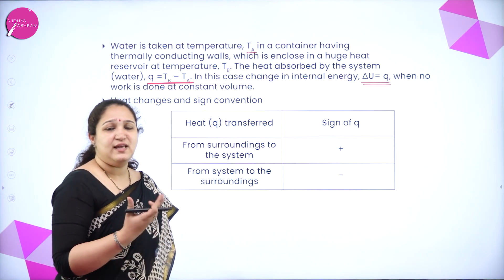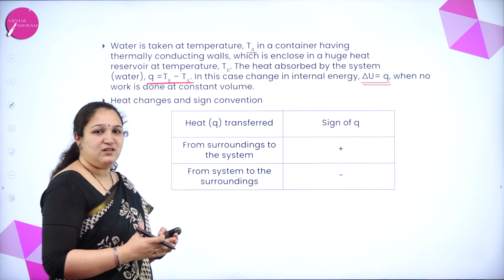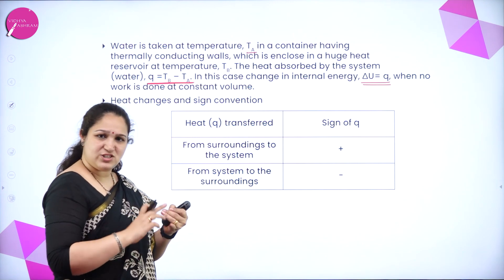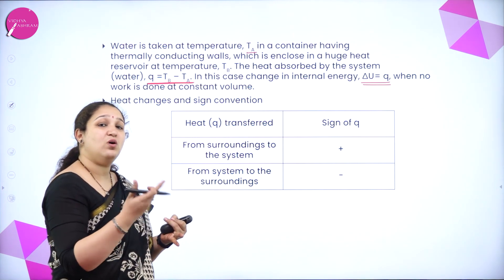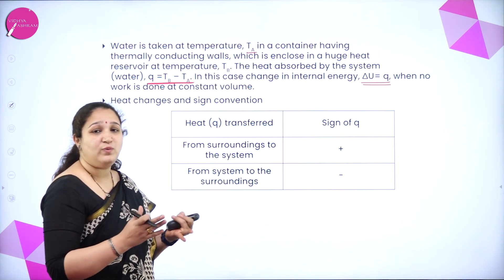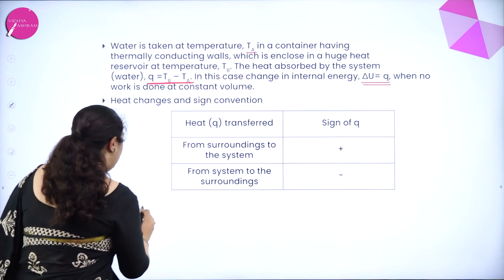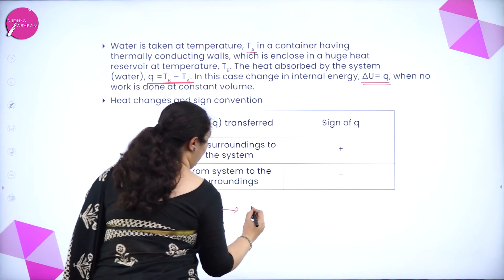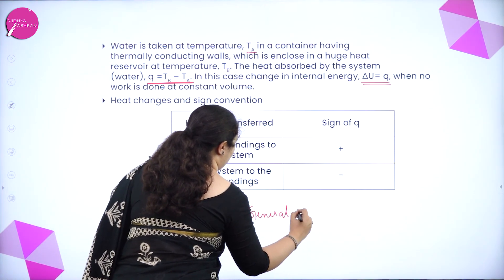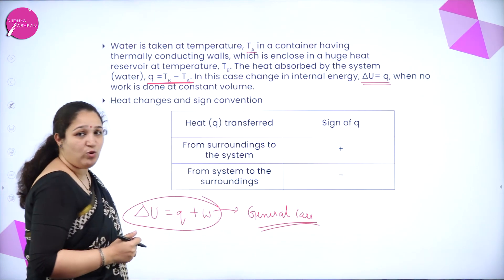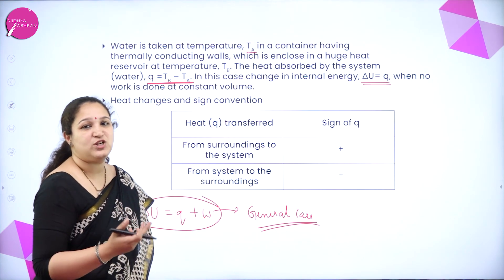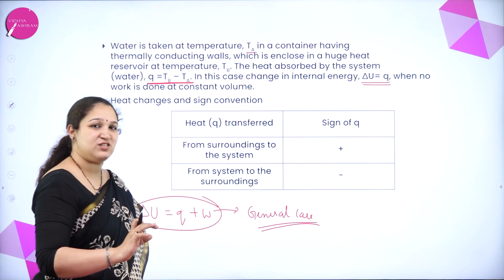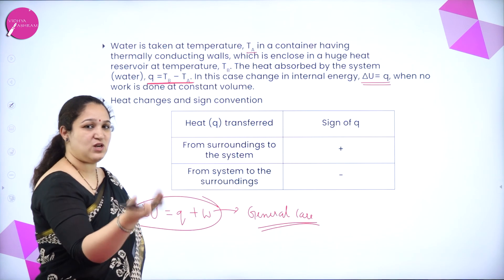In general, if the internal energy is changed by doing work as well as by heat exchange — both happening simultaneously — then what will be the internal energy? The change in internal energy will be equal to Q plus W. This is the general case.